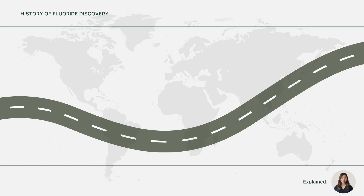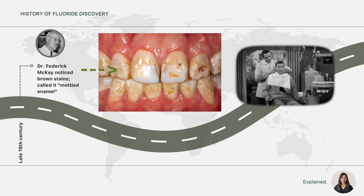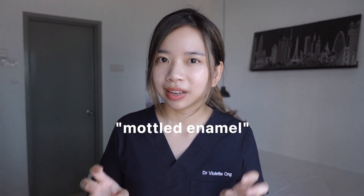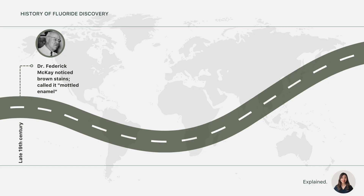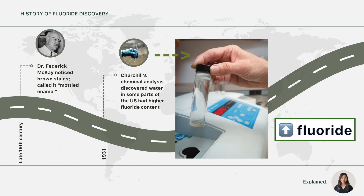In the early 20th century, Dr. Frederick McKay noticed brown stains on tooth enamel in people living in certain parts of the US. He described it as mottled enamel but didn't know what caused it. Then in 1931, it was discovered that water in some parts of the US had higher fluoride content, and this was the reason behind the enamel condition.